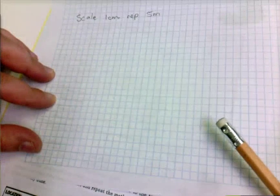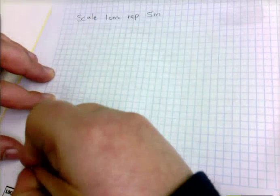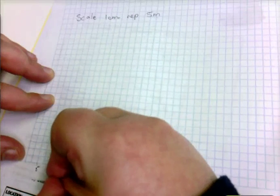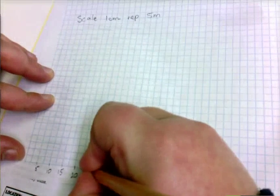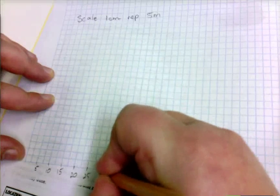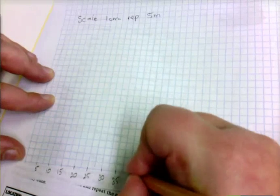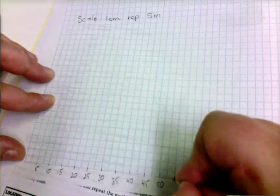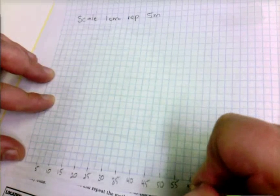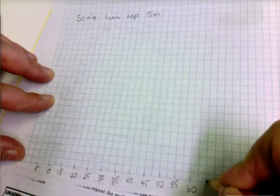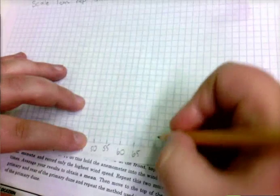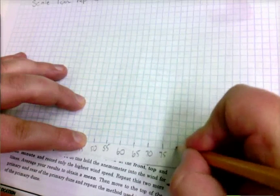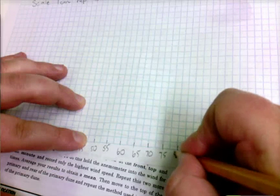Write that up at the top. That means for every 1 centimetre — which is 2 boxes — you're going to go up by 5. So 5, 10, 15, 20, 25, 30 and so on. You need to go up high enough to include our total so that it's guaranteed to fit on your graph paper.